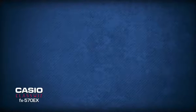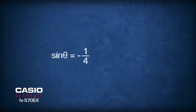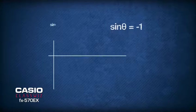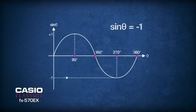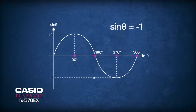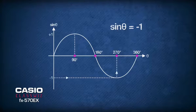So now we have sinθ equals negative 1 over 4 and sinθ equals negative 1. To solve sinθ equals negative 1, we can refer to the graph of sine and find that for angles within 0 to 360 degrees, the ratio of negative 1 corresponds to angle 270 degrees.